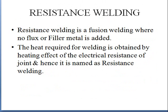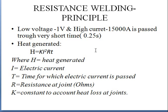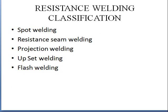Next one is resistance welding. Resistance welding is a fusion welding where no flux or filler material is added. The heat required for welding is obtained by the heating effect of the electrical resistance of the joint. The formula for heat generated is H = KI²RT, where H is the heat generated, I is the electrical current, T is the time for which the electrical current is passed, R is the resistance at the joint, and K is the constant accounting for heat loss at the joints. Generally, low voltage and high current is passed in a short time of 0.25 seconds.